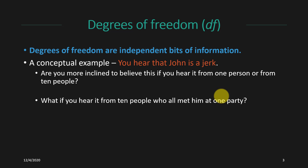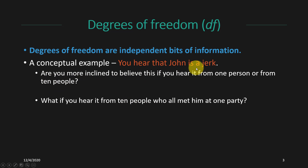But what if you hear it from 10 people who all met him at one party? Now you don't actually have 10 independent bits of information, because all those people had the same exposure to John and maybe John was just having a bad day. Maybe he's not a jerk — maybe he was just in a bad mood. So in the first case with 10 independent people we're more inclined to believe John is a jerk, but if those 10 people all had the same interaction with him, that undermines having 10 pieces of information because they're not actually independent.